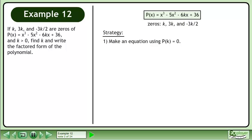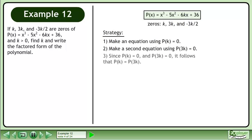Let's outline our strategy. First, make an equation using P(k) = 0. Next, make a second equation using P(3k) = 0. And finally, since P(k) = 0 and P(3k) = 0, it follows that P(k) = P(3k).